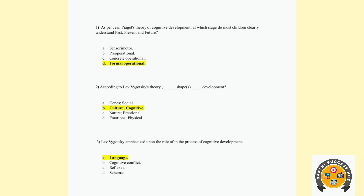First question: As per Jean Piaget's theory of cognitive development, at which stage do most children clearly understand present, past, and future? That is when children come to understand present, past, and future — that is the last stage, the formal operational stage.